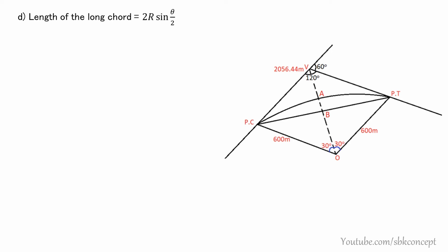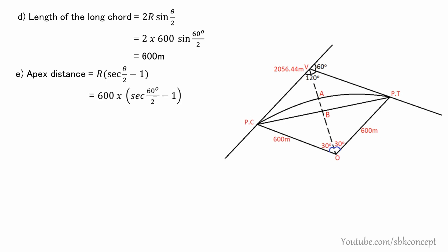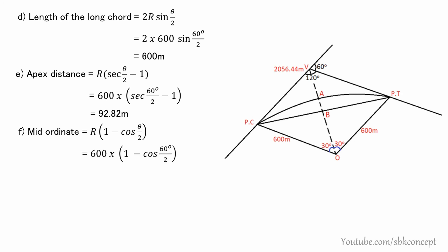The length of the long chord formula is 2R × sin(θ/2) = 2 × 600 × sin(30°) = 600 meters. The apex distance is R × (sec(θ/2) − 1) = 600 × (sec(30°) − 1) = 92.82 meters. Finally, the mid-ordinate is R × (1 − cos(θ/2)) = 600 × (1 − cos(30°)) = 80.38 meters.